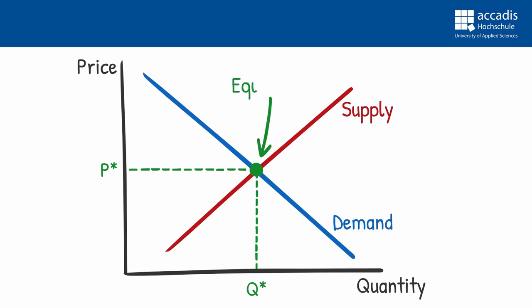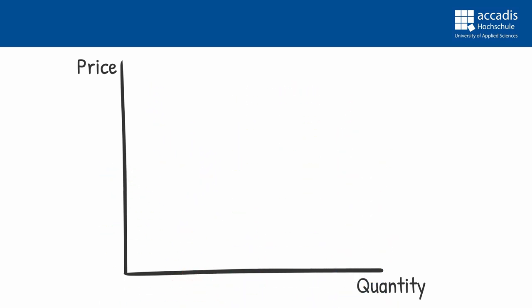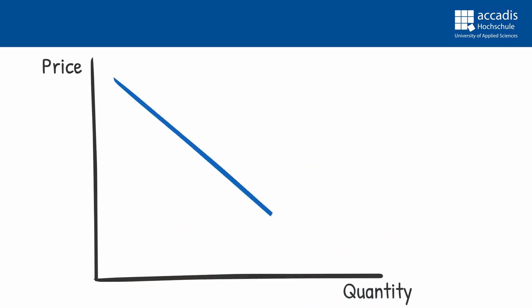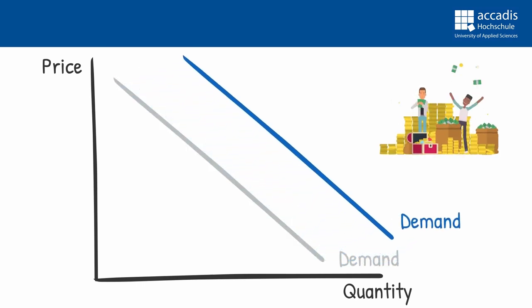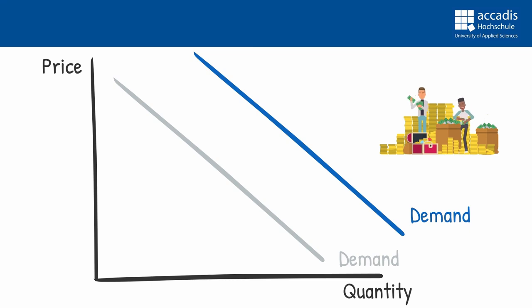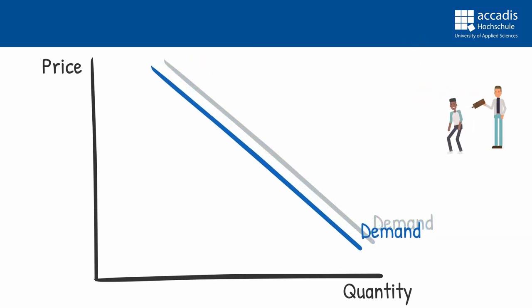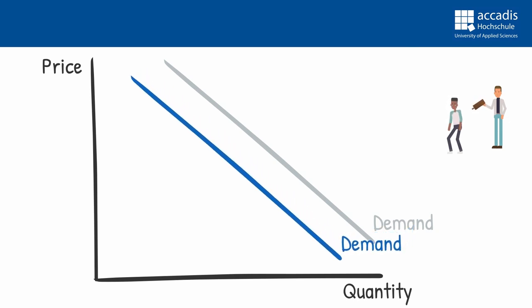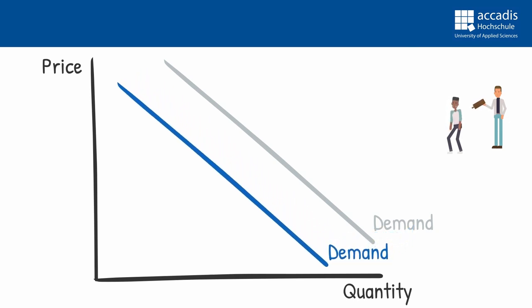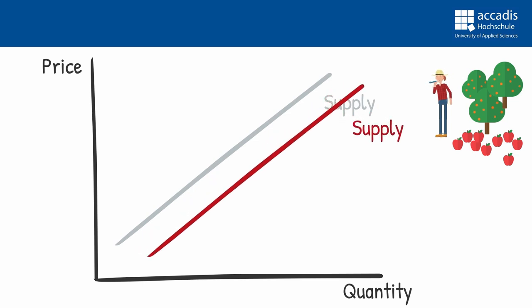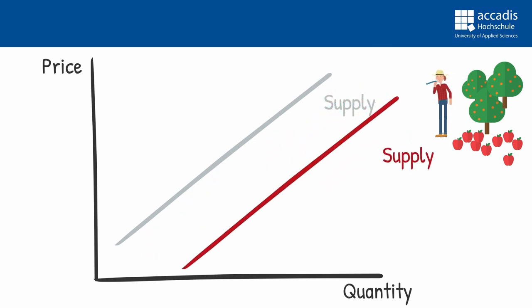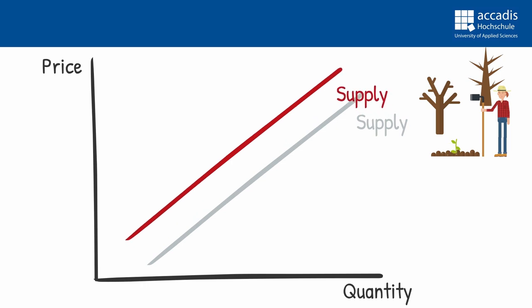Whenever we are above or below P*, prices face pressure to change — either they increase because we have a shortage, or they decrease because we have a surplus. These are the two driving forces behind our equilibrium. Only at that point where demand and supply are equal do we have a stable situation that does not change unless the underlying parameters change. Anything that changes the willingness to pay of consumers will shift the demand curve, and anything that changes the cost-revenue relation — so the profits of our firms — will shift the supply curve.